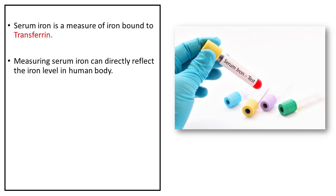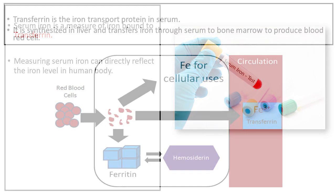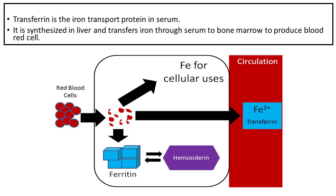Serum iron is a measure of iron bound to transferrin. Measuring serum iron can directly reflect the iron level in the human body. Transferrin is the iron transport protein in serum; it is synthesized in the liver and transfers iron through serum.